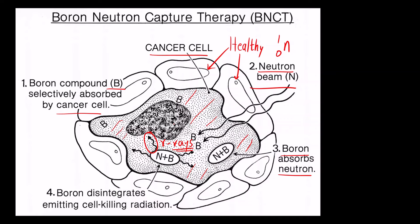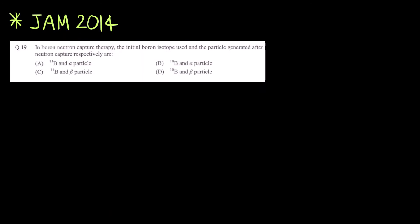This is a very important application to treat cancer using nuclear chemistry. Now let us solve a question asked in JAM 2014: In Boron Neutron Capture Theory, the initial boron isotope used and the particle generated after neutron capture respectively are?